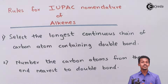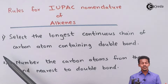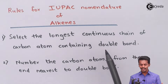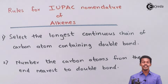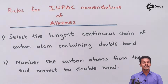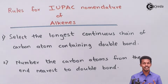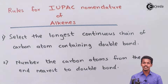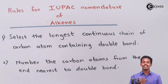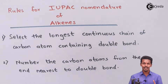Discussing about the rules of IUPAC nomenclature of alkene, starting with the first point: we have to select the longest continuous chain of carbon atoms containing a double bond. Just like in our previous chapter on alkane, we have also learned the rules of IUPAC nomenclature, and now we are going to study the rules for alkene. The main thing we should consider is the carbon-carbon double bond. We have to select the longest chain that should contain at least one carbon-carbon double bond.